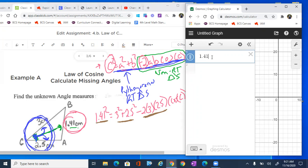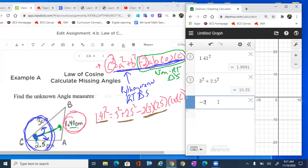So 1.41 squared, and then I'm gonna put 3 squared plus 2.5 squared. And then I'm gonna do negative 2 times 3 times 2.5.